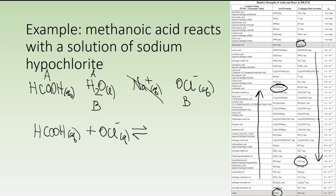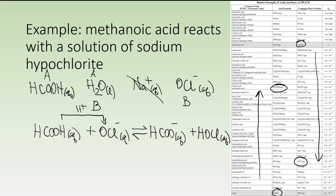We now predict products. One approach is to physically move a proton from the acid to the base, producing methanoate ion and, due to hypochlorite ion accepting the proton, hypochlorous acid. The other approach is to recognize that the products are the conjugates of the strongest acid and strongest base: methanoate ion is listed to the right of methanoic acid, and hypochlorous acid is listed to the left of hypochlorite ion. Either technique gives you the same products.